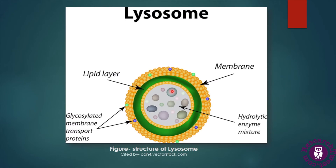Here in this diagram we can see the structure of lysosome. We can see the spherical structure having a lipid bilayer, and on the outside there are different types of transport proteins which carry waste material and other materials to the lysosome. Inside the lipid bilayer we can see the lumen of lysosome containing different types of hydrolytic enzymes responsible for the digestion of all waste.